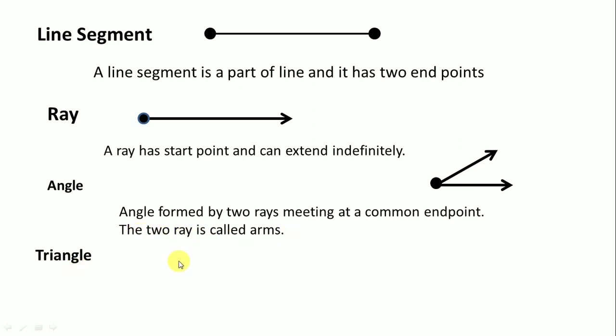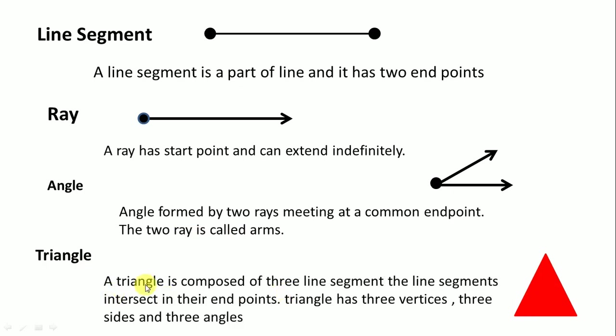Next is triangle. Here is our triangle. A triangle is composed of three line segments. The line segments intersect at end points. Triangle has three sides and three angles. This is the basic concept of geometry. Now we solve our puzzles.